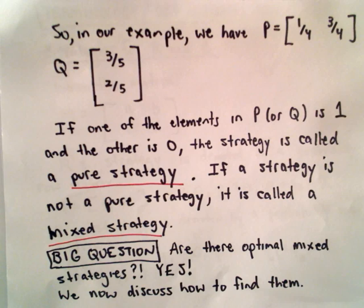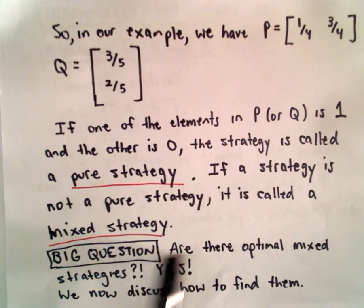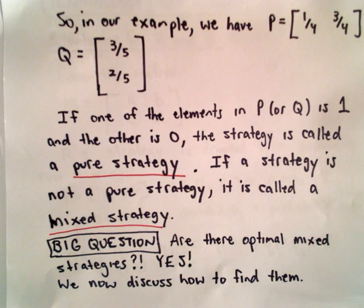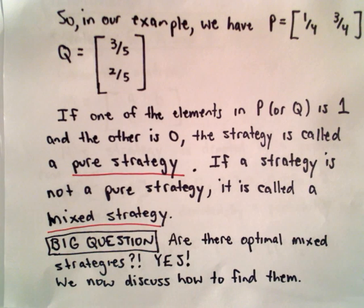So again, the big question here is, is there going to be an optimal mixed strategy for both players? And the amazing, I think it's interesting, the answer to this is actually yes, there's an optimal strategy for both players. If not, this whole discussion would probably not be so interesting. So the big question is, how do you actually go about finding these optimal strategies? And that's what we're going to start discussing in the next video.